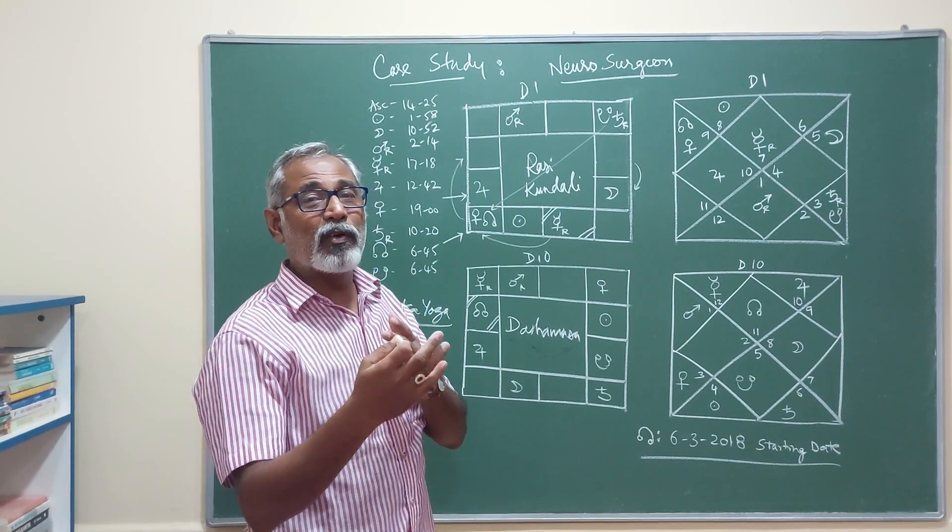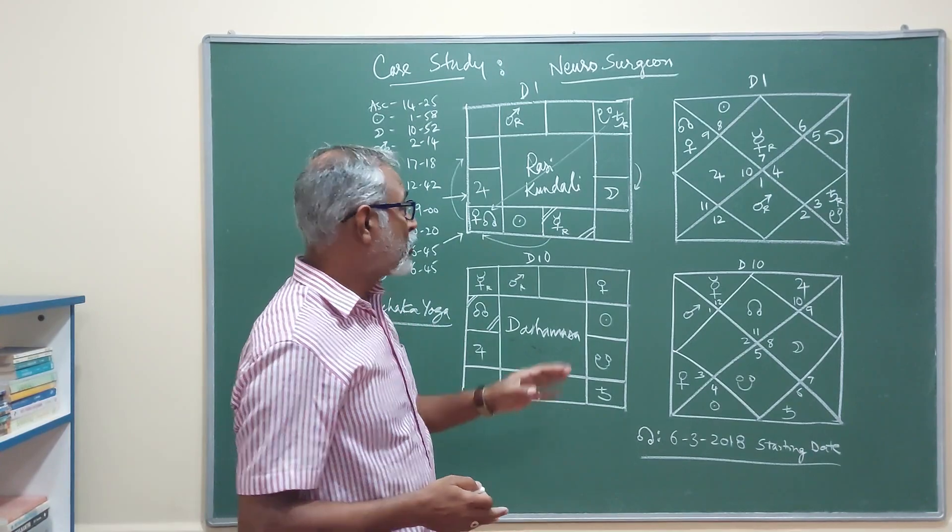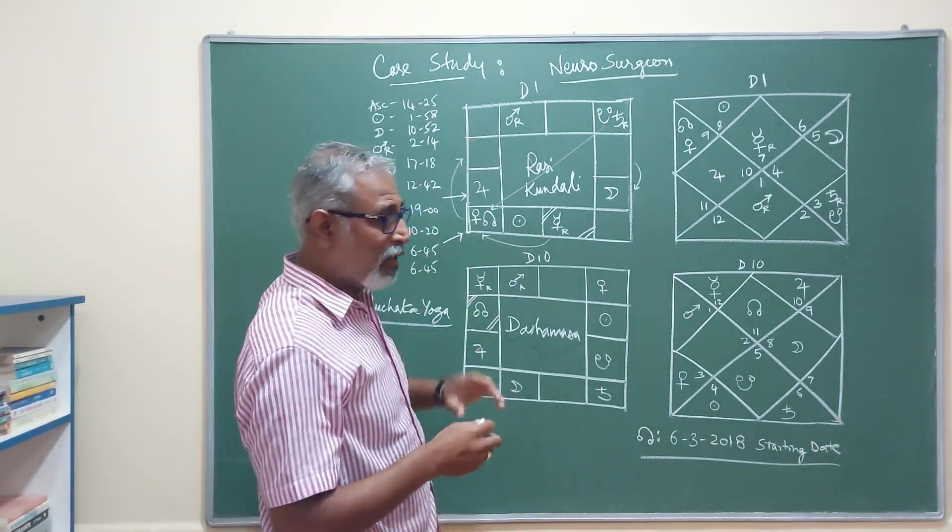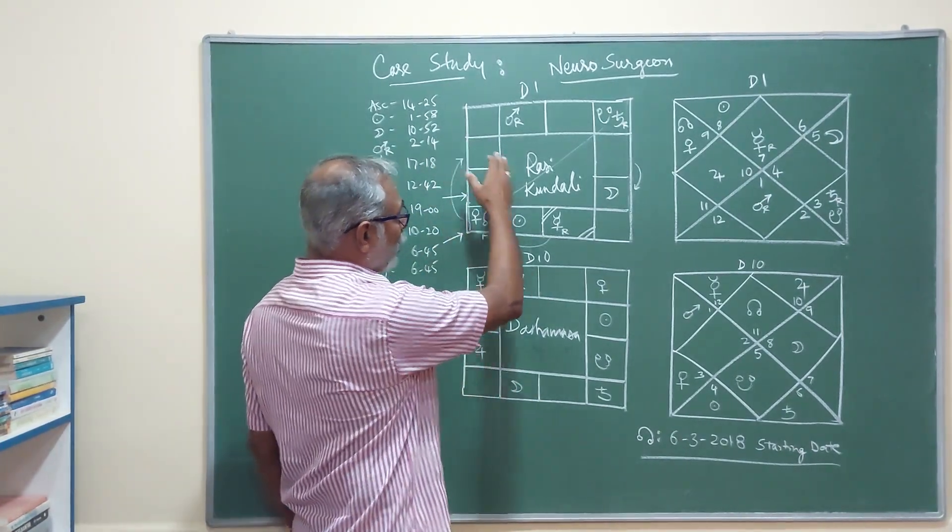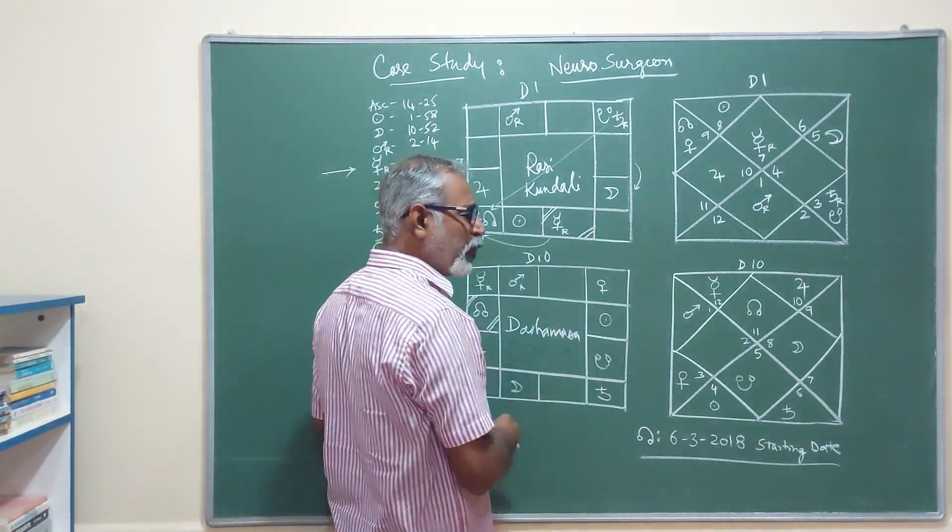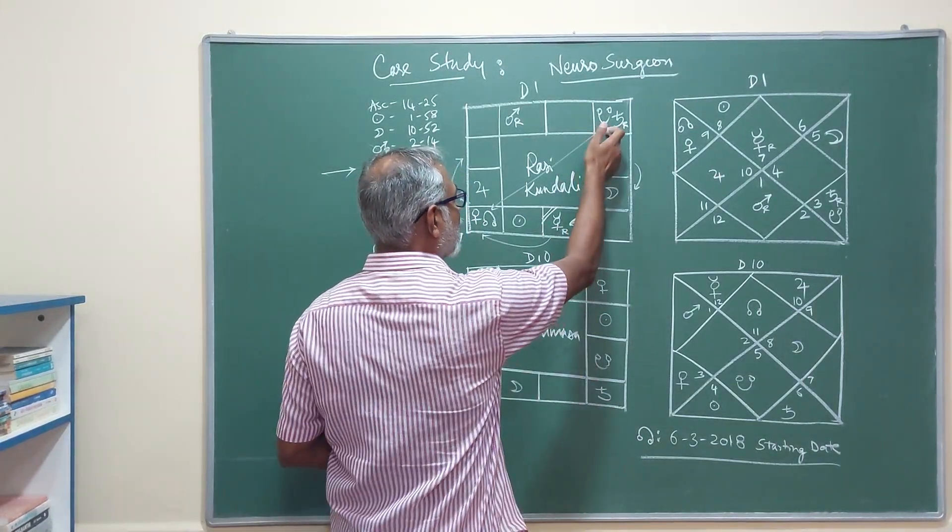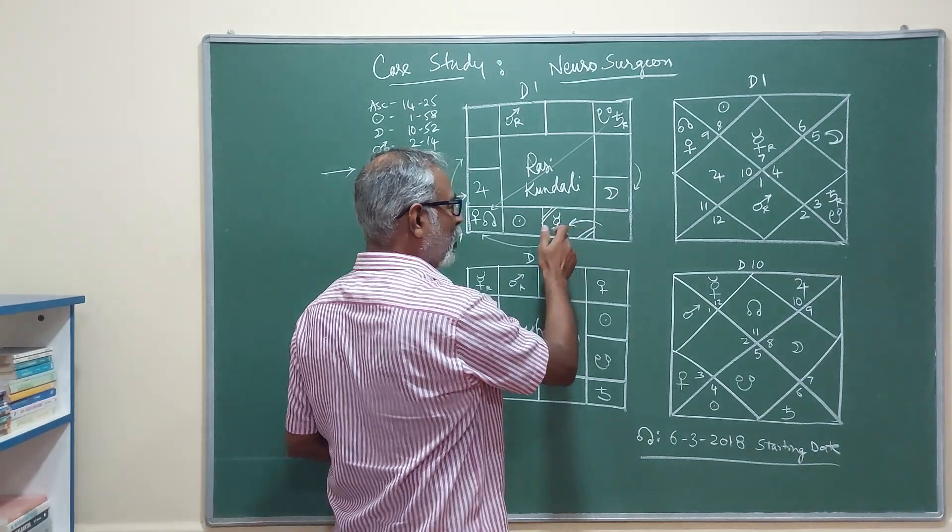That means as per the sixth house, he was destined to do something else. He did not want to become a neurosurgeon at first. So there was some other plan. But when we go to the 12th house, the 12th lord is beautifully posited in the Lagna.